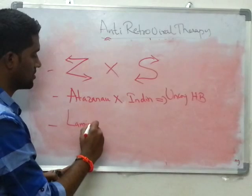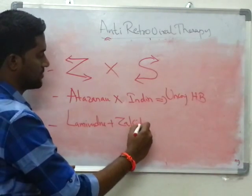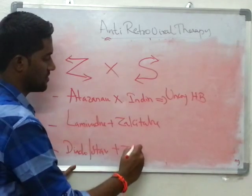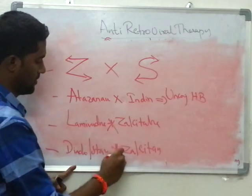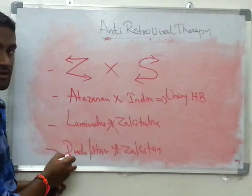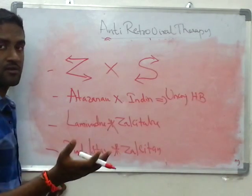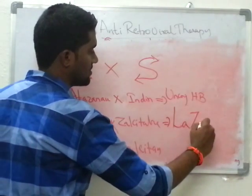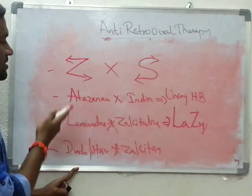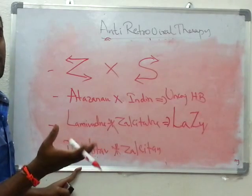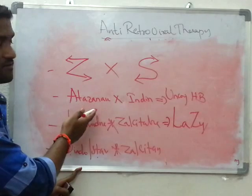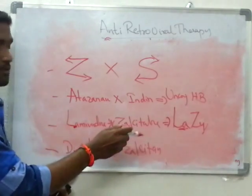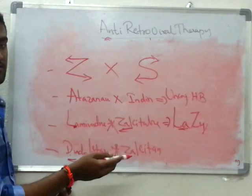The reason these combinations are avoided: Didanosine causes pancreatitis, Stavudine causes peripheral neuropathy, and Zalcitabine can cause both pancreatitis and peripheral neuropathy. So combining Lamivudine and Zalcitabine, or Didanosine/Stavudine with Zalcitabine, is contraindicated due to additive toxicity.